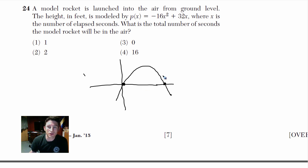So basically, we're trying to figure out what is the total number of seconds the model rocket will be in the air. So we want to know when does it hit the ground again, right? So we want the height to actually be zero. So we're looking for that height to be zero. So we want P of X to be zero. They put P of X here, but they told us it's the same thing as height, right? So we know height to equal zero. So what we're going to do is we're going to write an equation and plug in zero for P of X and solve.